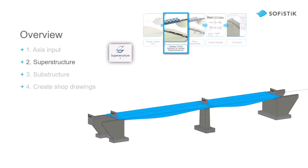In the second video, we will create a superstructure. This superstructure is based on a two-dimensional cross-section that we will sweep along the axis, and that way we can even vary its height along the axis alignment.